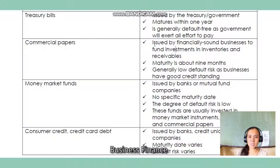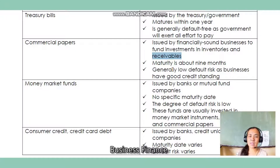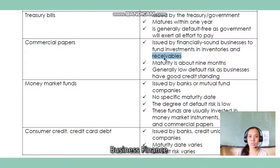Next are commercial papers. These are issued by financially sound businesses and generally have low default risk because businesses that issue commercial papers are financially sound. They usually just need more funds for inventories and receivables. For example, if they receive a large purchase order and don't have enough inventory allocation to fulfill it, or if the collection of receivables will still take time but they need the funds now, then they can issue commercial papers. Maturity is about nine months, so it still falls within the shorter period — within one year.